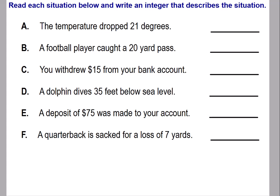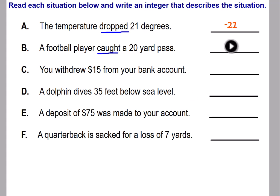Now that we're going to deal with positive and negative numbers, whenever we look at situations we have to read, we need to look for clue words that tell us if a number is positive or negative. In elementary, all of our numbers were positive, so we didn't have to worry about that — but now we have to identify numbers as positive or negative. Look at A: 'The temperature dropped 21 degrees.' The clue word is 'dropped,' which means to go down, decreasing in temperature — so that would be negative 21. B: 'A football player caught a 20-yard pass.' The clue word is 'caught.' If you catch a pass, you gain yardage — so that would be positive 20.